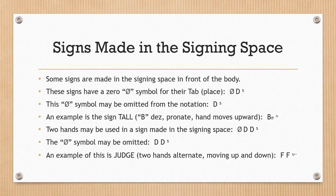Signs made in the signing space. Some signs are made in the signing space in front of the body. These signs have a zero symbol for their TAB/place, which may be omitted from the notation. An example is the sign TALL: B hand, pronate, hand moves upward. Two hands may also be used in a sign made in the signing space, with the zero symbol optionally omitted. An example of this is JUDGE: two hands alternate, moving up and down.